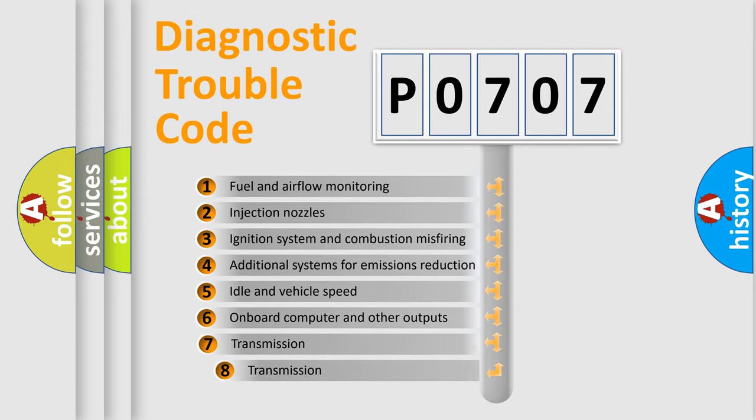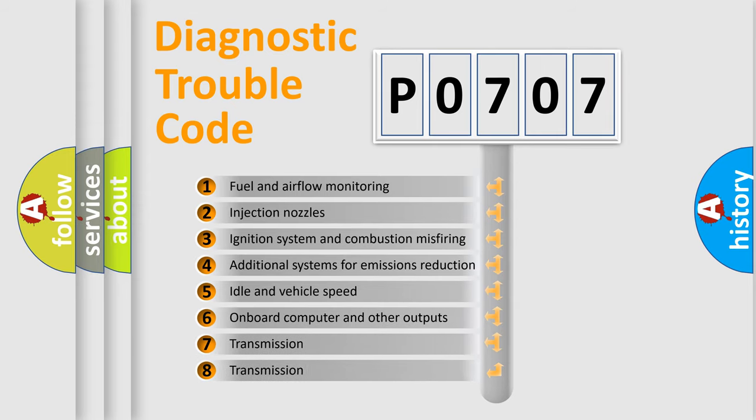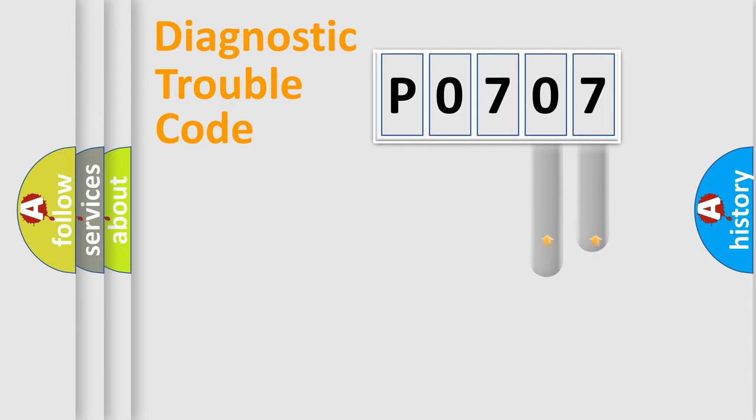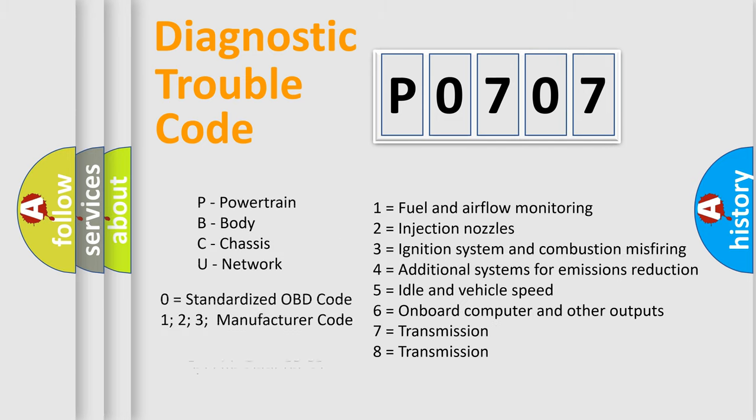The third character specifies a subset of errors. The distribution shown is valid only for the standardized DTC code. Only the last two characters define the specific fault of the group. Let's not forget that such a division is valid only if the other character code is expressed by the number 0.